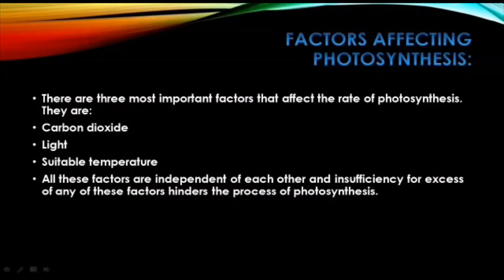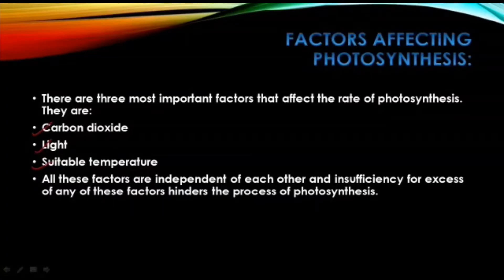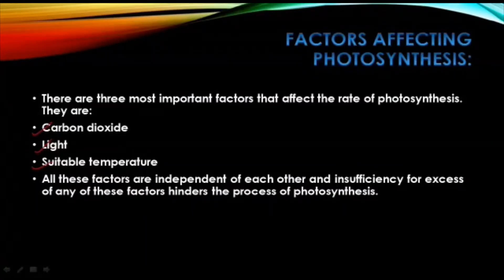The three factors are: carbon dioxide, light, and suitable temperature. All three are independent — they don't depend on each other and independently affect the rate of photosynthesis. Higher the concentration of carbon dioxide, higher will be the rate of photosynthesis, because more CO2 available means more photosynthesis, as CO2 is one of the raw materials for photosynthesis.